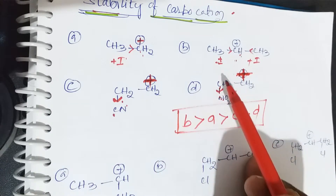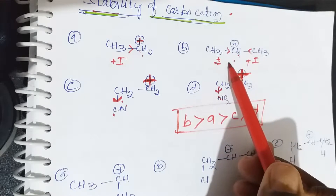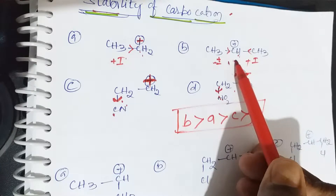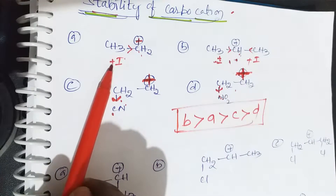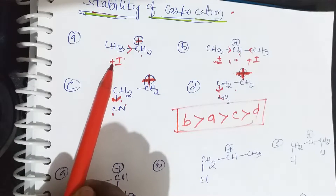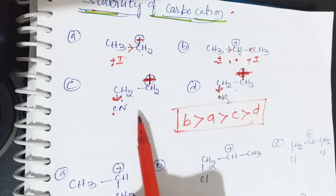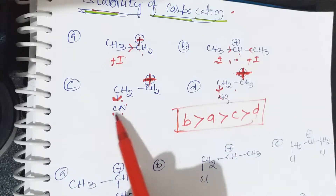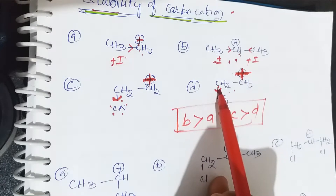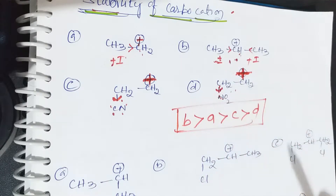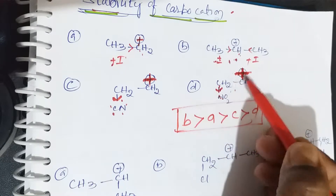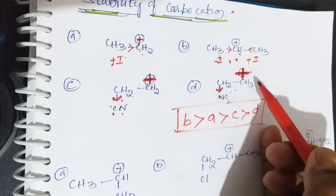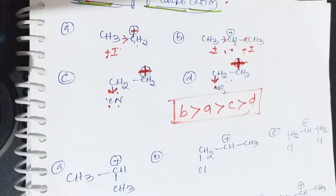The highest stability is the secondary carbocation because both groups are plus I, so positive charge is completely decreased. The first one also has one methyl group (electron releasing), so positive charge is slightly decreased. For cyanide and nitro groups (electron withdrawing), positive charge increases and stability decreases. That is the stability order of carbocation.